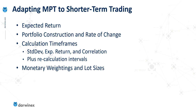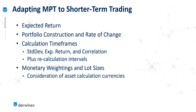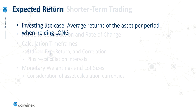And finally, we need an adaptation for the conversion of monetary weightings and lot sizes. This will need to include consideration of the asset calculation currencies, and there might be a number of conversions required. So that's an overview of the topics I'll be considering. Let's now go into a bit more detail on the first one: expected return.